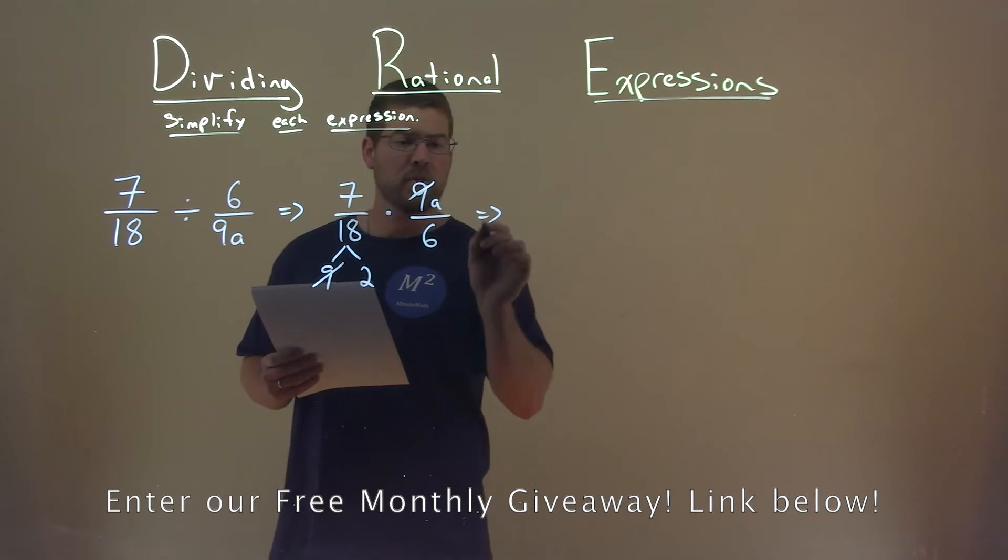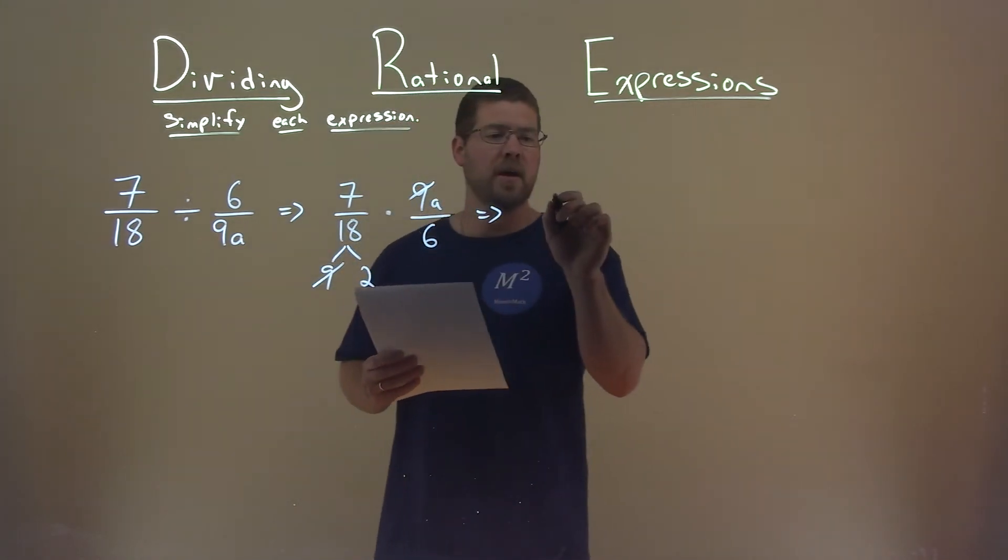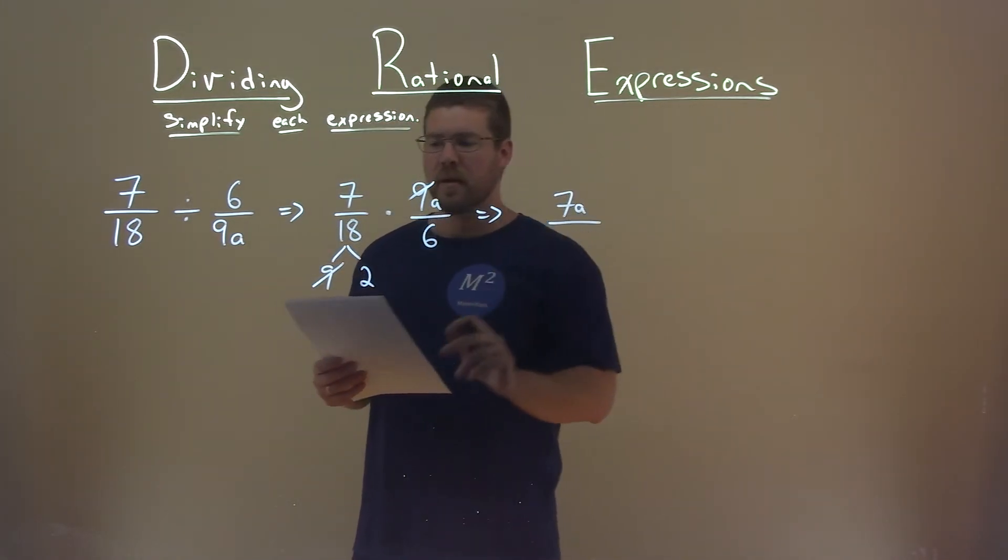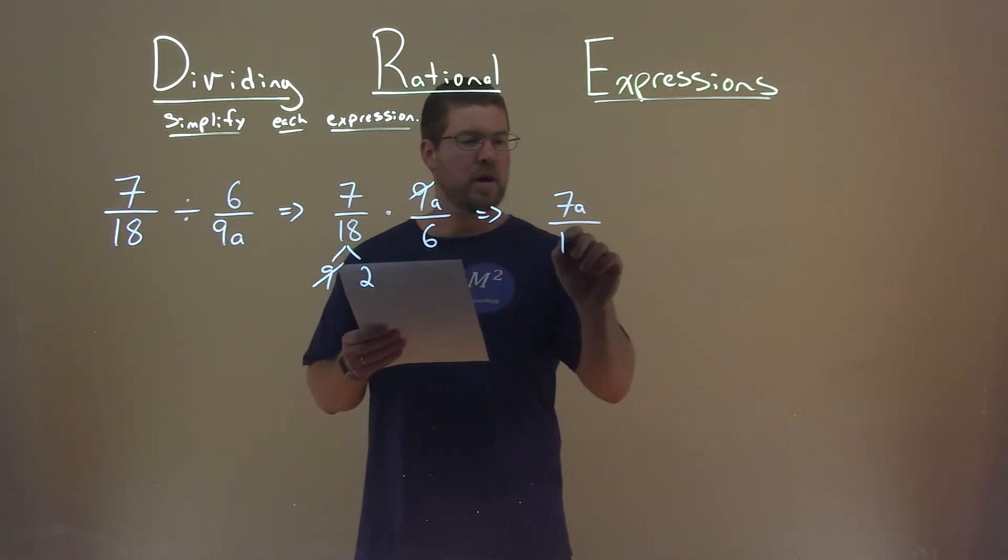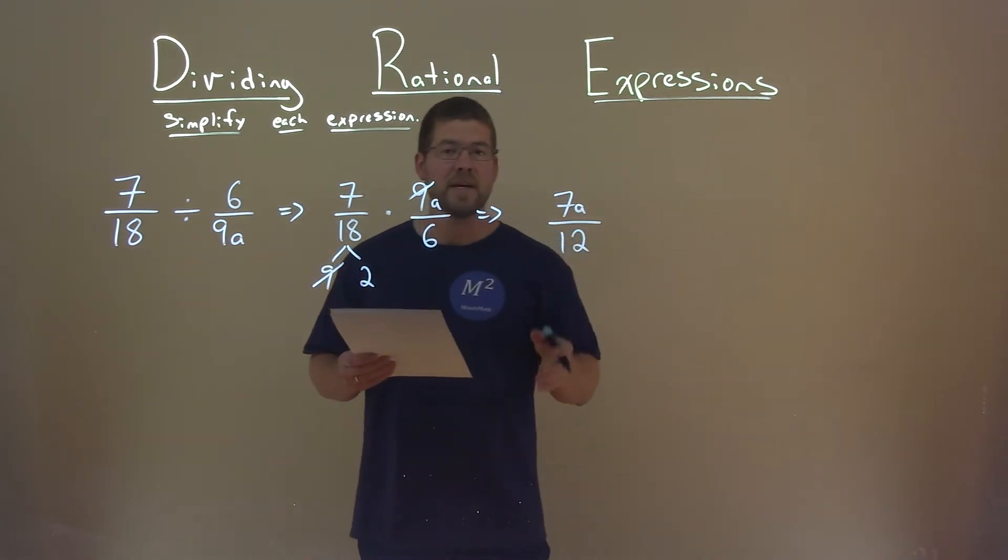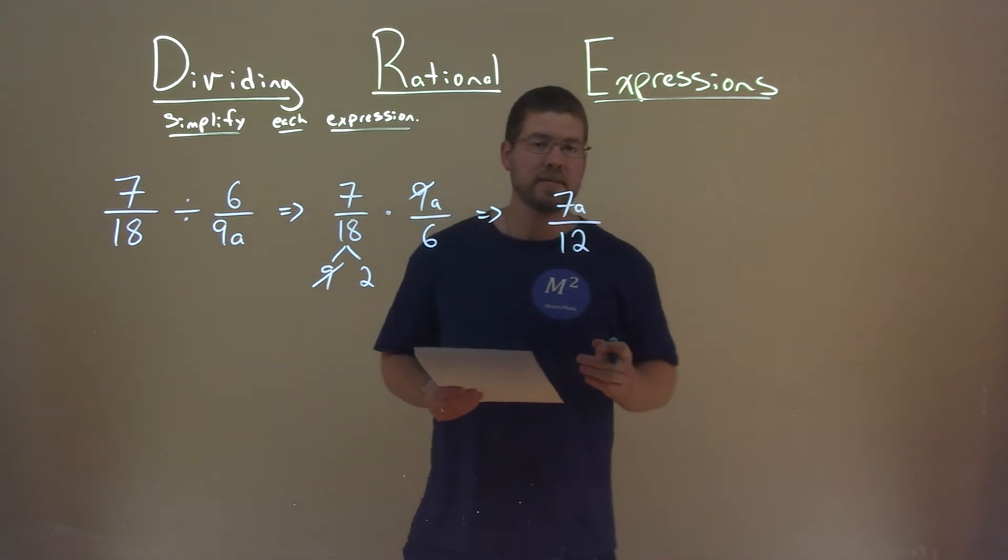So now we multiply across the numerator and the denominator. 7 times a, 7a, 2 times 6 is 12, and that's it. 7a divided by 12 is our final answer.